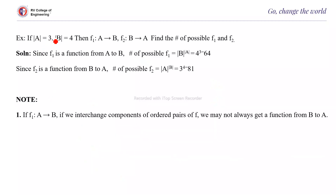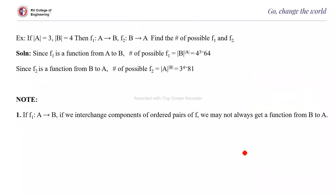If |A| = 3 and |B| = 4, find the number of possible functions f₁: A to B and f₂: B to A. For f₁, the number of functions = |co-domain|^|domain| = 4³ = 64. For f₂, A is the co-domain, so it is 3⁴ = 81. Note: if f₁ is a function from A to B and we interchange the components of the ordered pairs of f, we may not always get a function from B to A. We will stop here and continue the types of functions in the next video. Thank you.